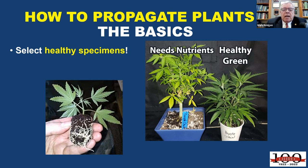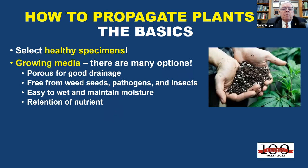In addition to healthy stock plants, you need to consider the media. A propagation medium should have good drainage because you need oxygen in the medium so roots can respire well. The medium should be free of weed seeds, pathogens, and insects. It should wet easily, maintain moisture, and have some cation exchange capacity — the ability to retain some nutrients — so propagating plants have nutrition available as they start to grow.